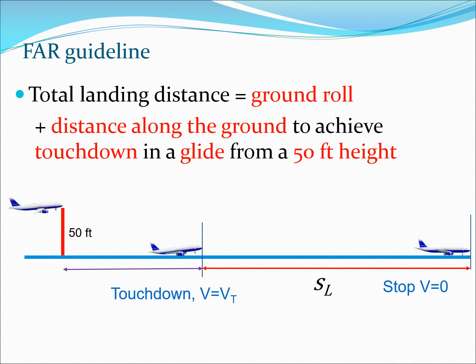From a practical standpoint, FAR (Federal Aviation Regulations) guidelines define total landing distance as the ground roll distance s_L plus the distance needed to descend from 50 feet height to touchdown along a glide path. This 50-foot clearance height serves as a margin of safety, and the runway must accommodate the full total landing distance.